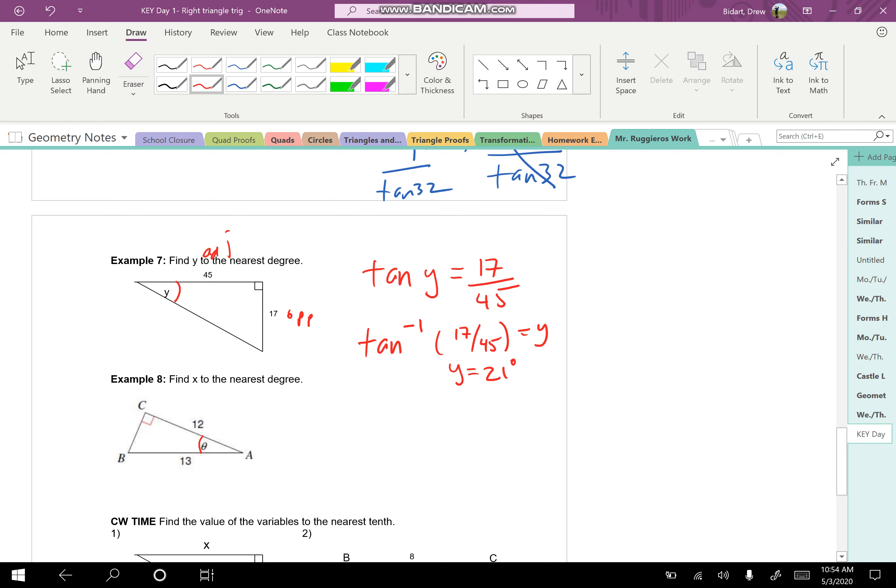So the angle ends up being about 20.695. Let's see what they want us to round to. Nearest degree. So that should be about 21 degrees. So again, what we do is we use that inverse when you want to find the angle.